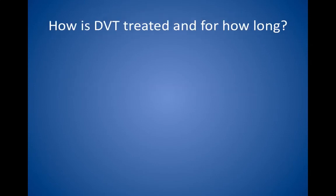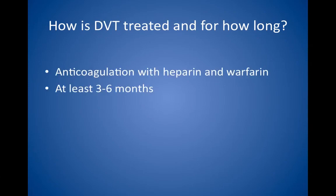How is DVT treated and for how long? Systemic anticoagulation is necessary. Use intravenous heparin or subcutaneous low molecular weight heparin initially, followed by crossover to oral warfarin. Patients should be maintained on warfarin for at least three to six months, possibly for life if more than one episode of clotting occurs.